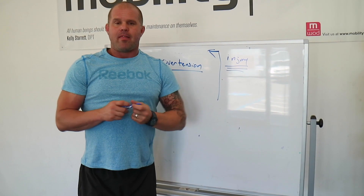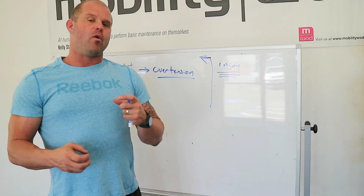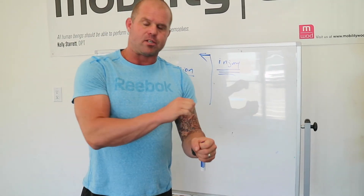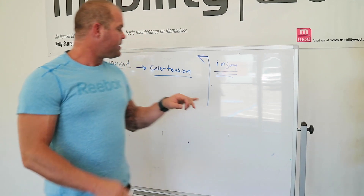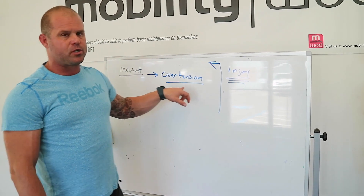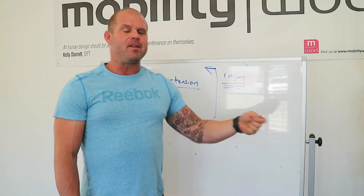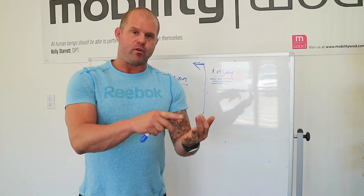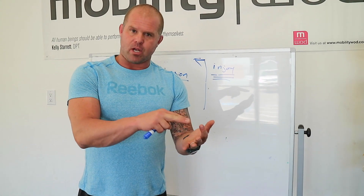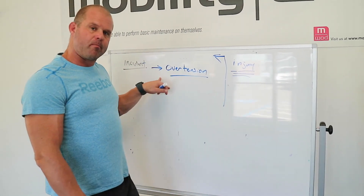Over tension is a simple idea. Nothing has changed in your mechanics — you haven't changed your shoes, nothing occult has occurred, you haven't fallen and injured your kneecap. But typically something has changed in the environment of the human. We ask: have you upped your volume? Have you done more sitting? Have you recovered less? Over tension just means the system is under too much mechanical tension, and we want to get to the understanding of what triggered this overtensioned problem.